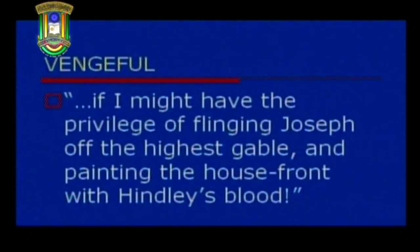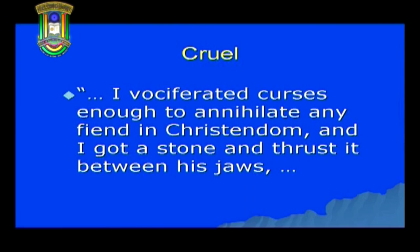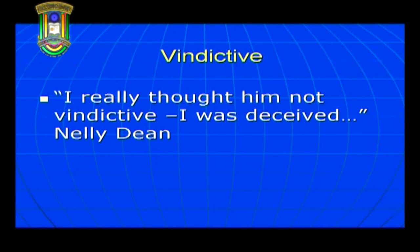He seeks vengeance against Hindley and destroys him both financially and physically. He forcibly gets Catherine Junior married to his son. He is responsible for causing Edgar's death by the forceful confinement of his daughter. He is revengeful toward his wife because she is the sister of Edgar. He does not even spare his own son. Look at a few examples of his vengefulness: 'If I might have the privilege of flinging Joseph off the highest gable and painting the house front with Hindley's blood... I vociferated curses enough to annihilate any fiend in Christendom. I got a stone and thrust it between his jaws.' Nelly Dean says, 'I really thought him not vindictive. I was deceived.'